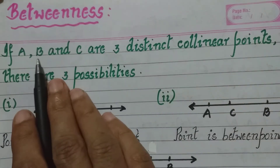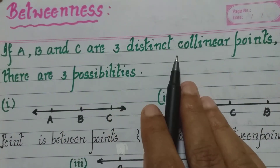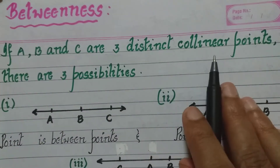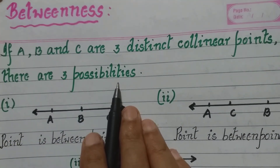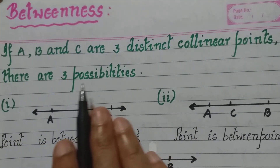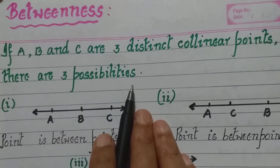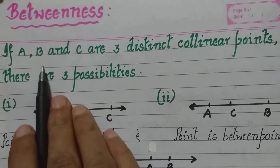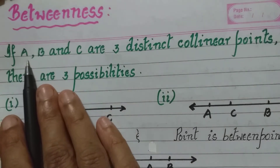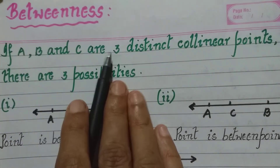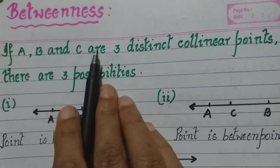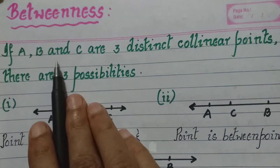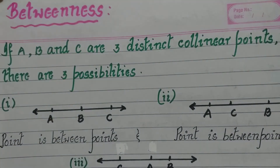If A, B, and C are three distinct collinear points, there are three possibilities. When all three points lie on a line, any one of these three points can lie between the other two.